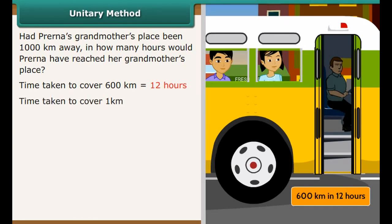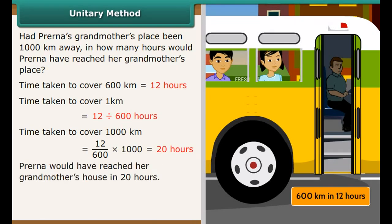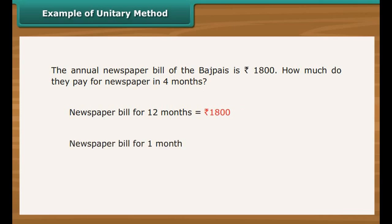The method of calculating the value of 1 first and then many is called the unitary method. For example, the annual newspaper bill the Barge family pays is Rs. 1800. How much do they pay for 4 months? The newspaper bill for 12 months is Rs. 1800. For 1 month it is Rs. 1800 by 12, that is Rs. 150. Therefore, the newspaper bill for 4 months is Rs. 150 into 4, which equals Rs. 600.